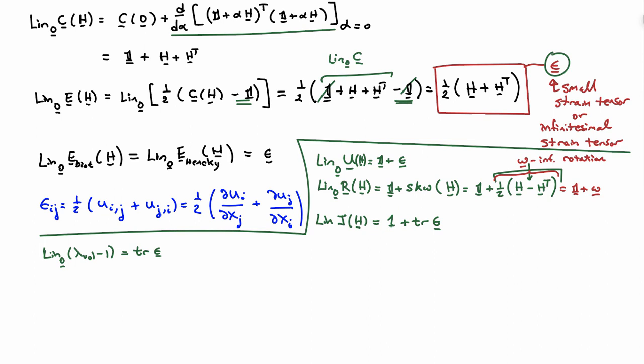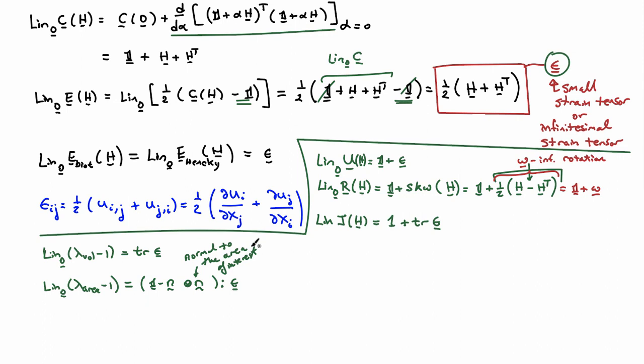Written more carefully: if we linearize about H equals zero, the volumetric stretch minus one—which is the volumetric strain—gives us trace of epsilon. We can also linearize the area strain. The area strain is the area stretch minus one. Going through the linearization process for small displacement gradients, we get (identity minus n outer product n) double-contracted with epsilon, where n is the normal to the area of interest.